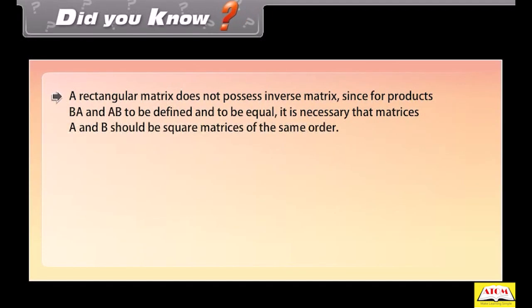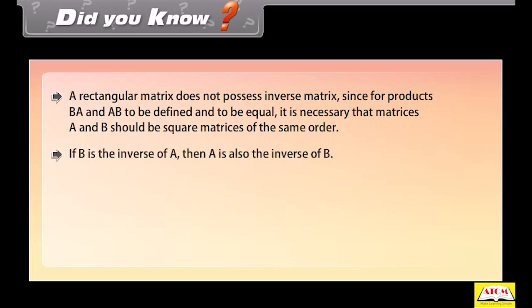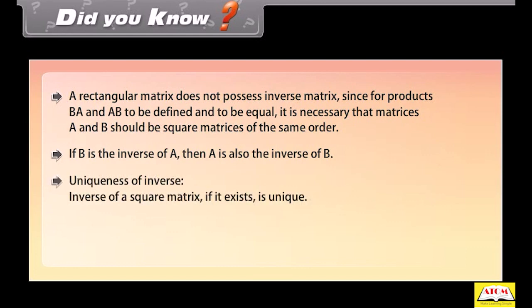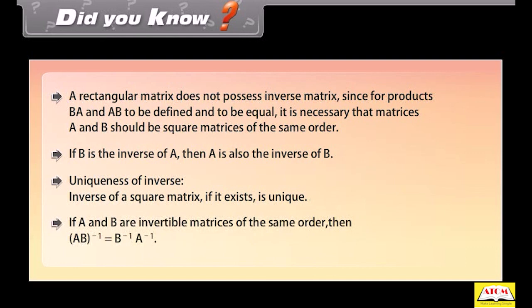A rectangular matrix does not possess an inverse matrix since for products BA and AB to be defined and equal, it is necessary that matrices A and B should be square matrices of the same order. If B is the inverse of A, then A is also the inverse of B. Uniqueness of inverse: The inverse of a square matrix, if it exists, is unique. If A and B are invertible matrices of the same order, then the inverse of AB equals the inverse of B times the inverse of A.